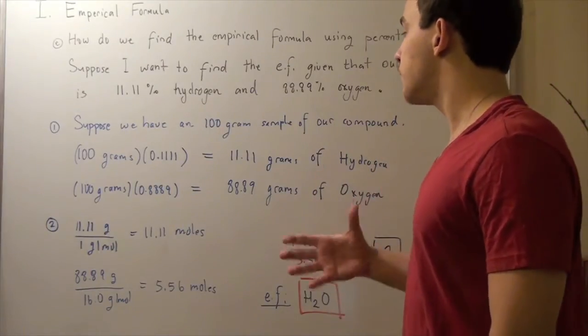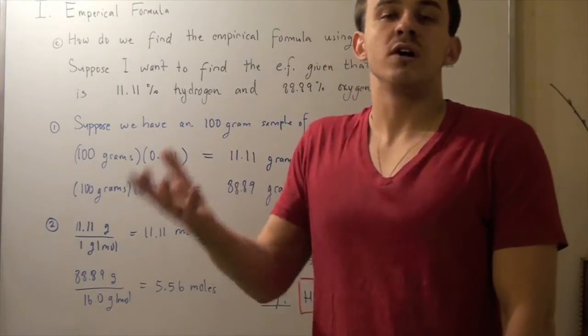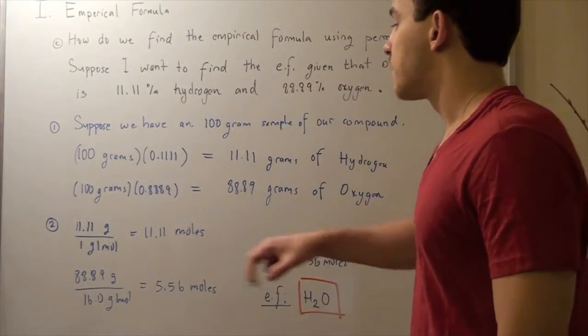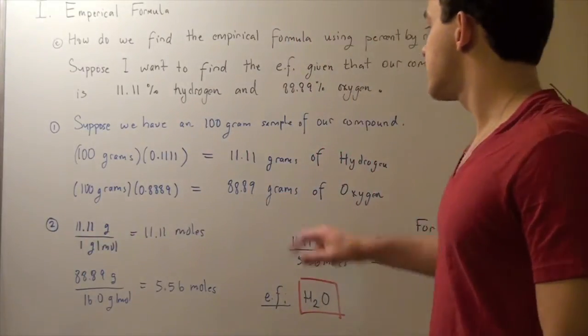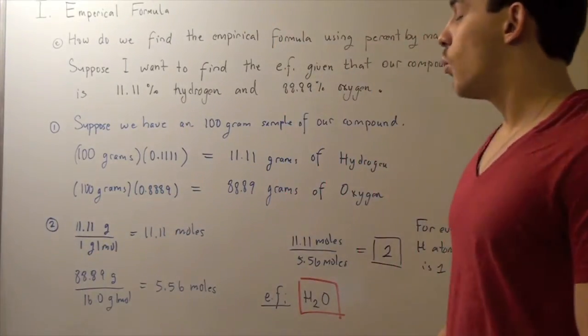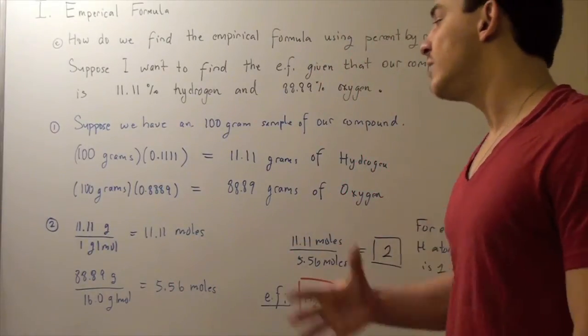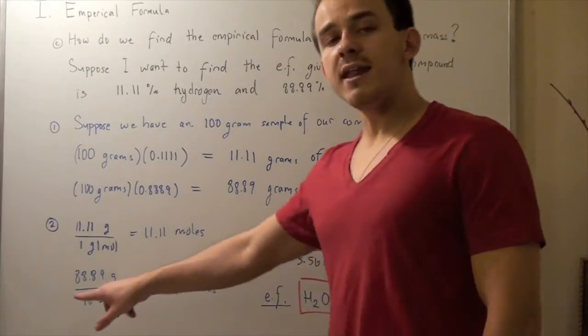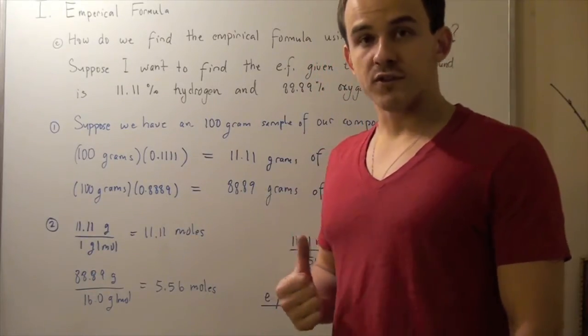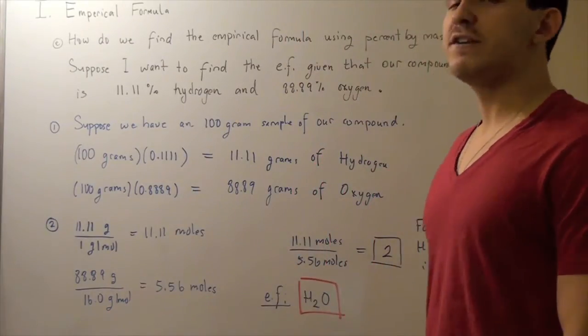Now, I have to convert my grams to moles. In other words, I want to find how many moles of each guy or of each atom is in my compound. Now, 11.11 grams of H divided by the molecular or atomic weight of H, one gram per mole, gives me 11.11 moles of H. Likewise, I do the same thing for oxygen. 88.89 grams of oxygen divided by the atomic weight for oxygen, 16 grams per mole, grams cancel and I get 5.56 moles.